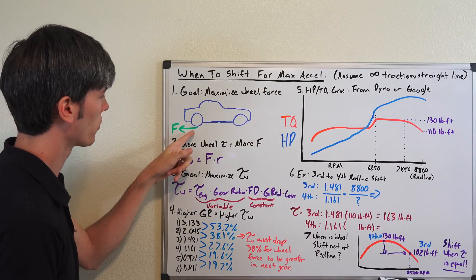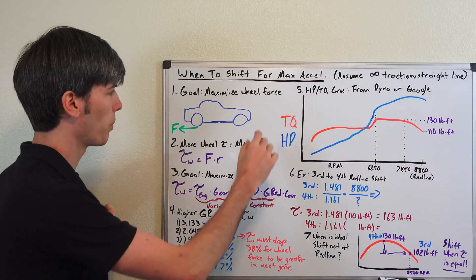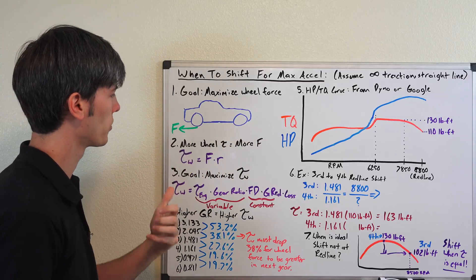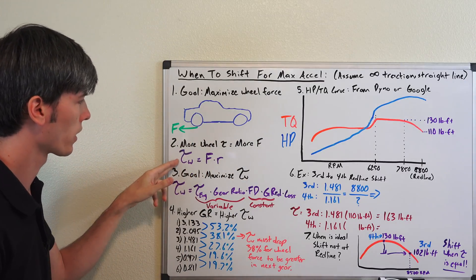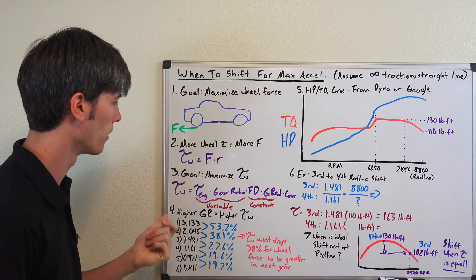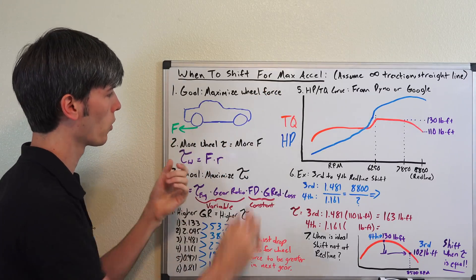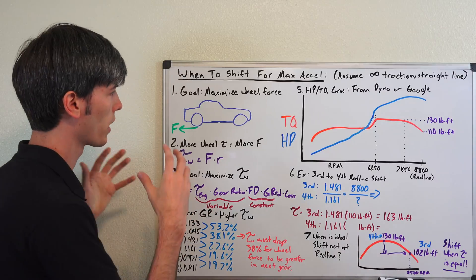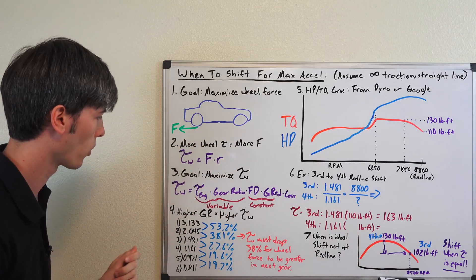So in order to maximize this force at the wheels, we want our torque at the wheels to be as large as possible. So your engine sends torque back, it goes through the transmission, hits the rear differential, comes to your wheels. You want that torque at the wheels to be as large as possible. That torque at the wheels is equal to the force that it's applying multiplied by the radius of that tire. We'll get maximum acceleration when we have maximum wheel torque, which gives us our maximum wheel force.